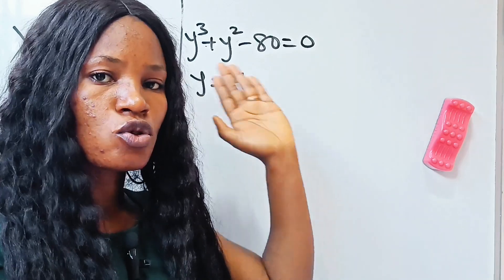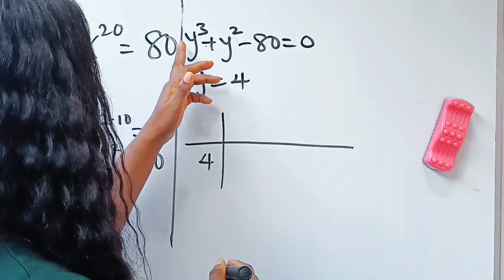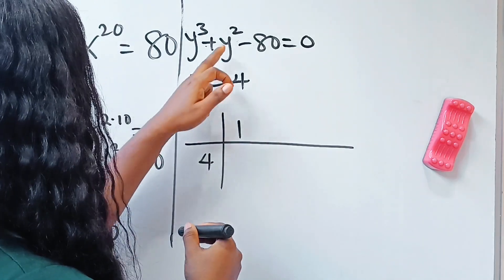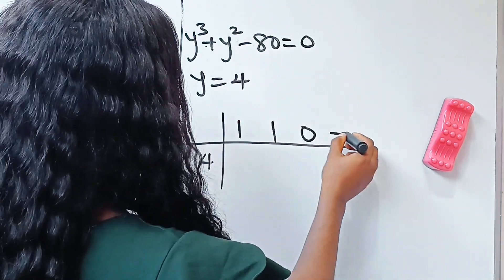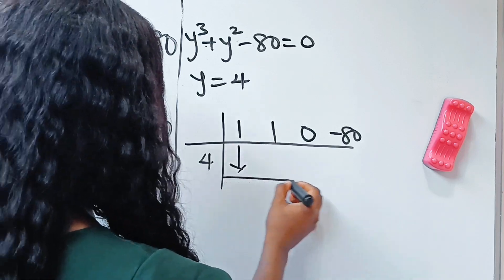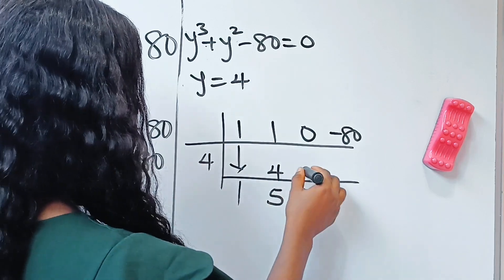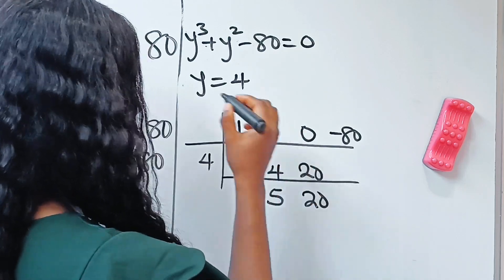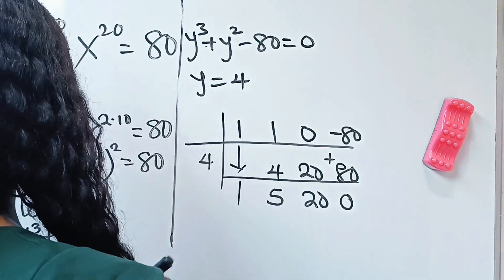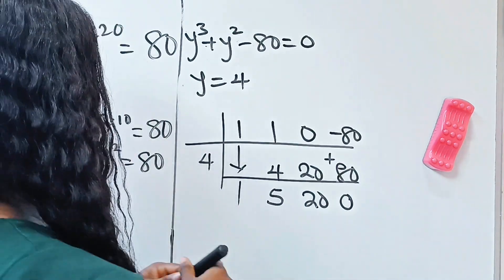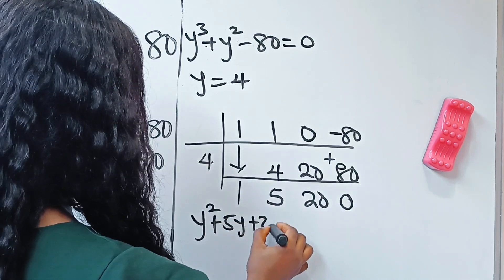Since y equals 4, we'll use synthetic division. The coefficients of our polynomial y³ + y² + 0y − 80 are: 1, 1, 0, −80. Bringing 1 down: 4 times 1 is 4; 1 plus 4 is 5; 4 times 5 is 20; 0 plus 20 is 20; 4 times 20 is 80; −80 plus 80 is 0. So our quadratic equation is y squared plus 5y plus 20 equals 0.